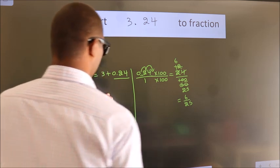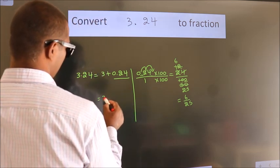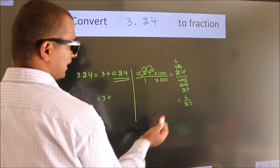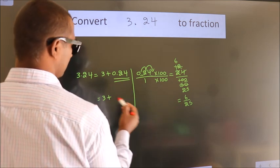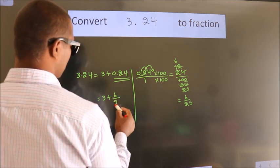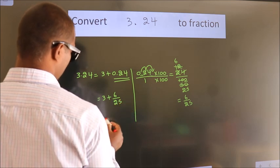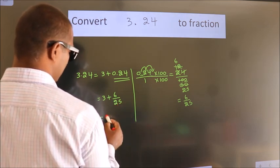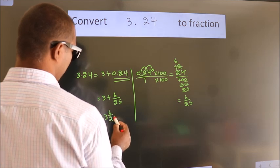Now here, 3 plus in place of 0.24, we write this fraction 6 by 25. So 3 plus 6 by 25. In mixed fraction it is 3 and 6 over 25.